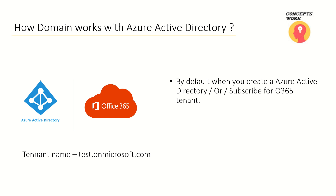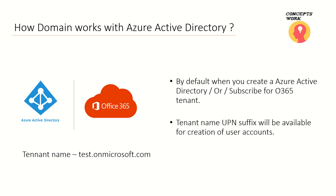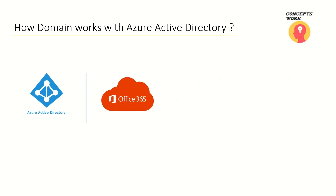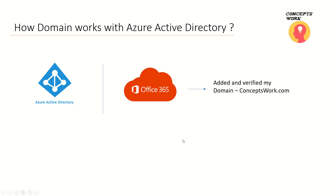The first name you use for your directory gets registered as a domain so you can create user accounts — this process helps you create cloud identities. But if you have your own domain, like conceptswork.com, and need to create users with a UPN like user@conceptswork.com, you have to add and verify that domain in your Azure Active Directory tenant.